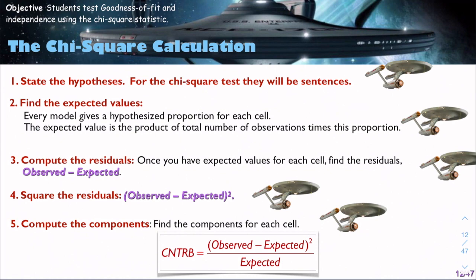What we need to do: state the hypothesis. For the chi-squared test, they will be sentences. We find the expected values. Every model gives a hypothesized proportion for each cell. The expected value is the product of total number of observations times this proportion.